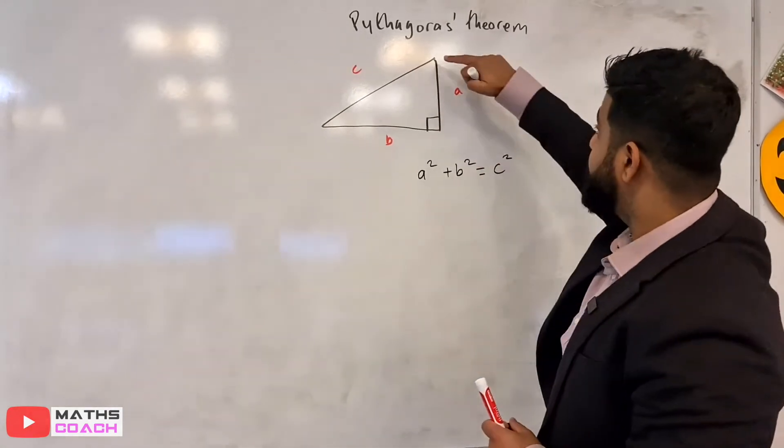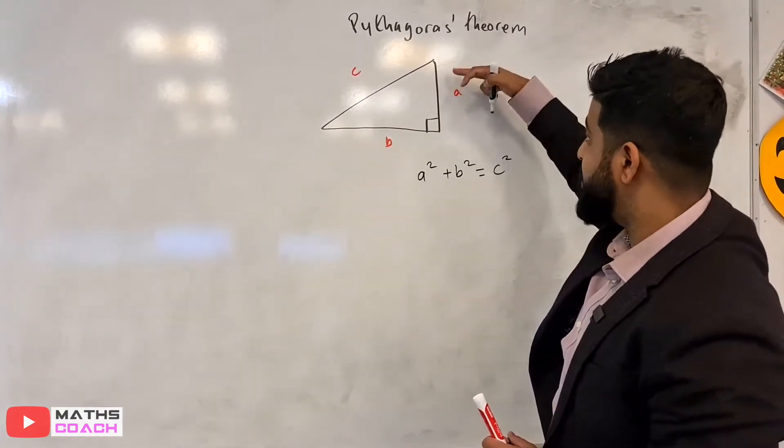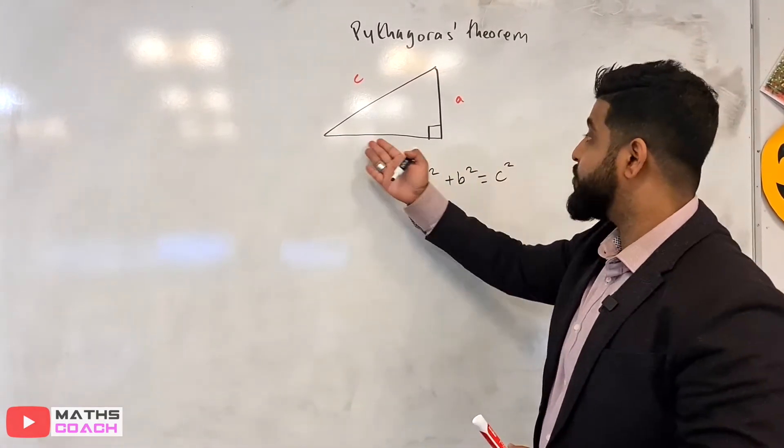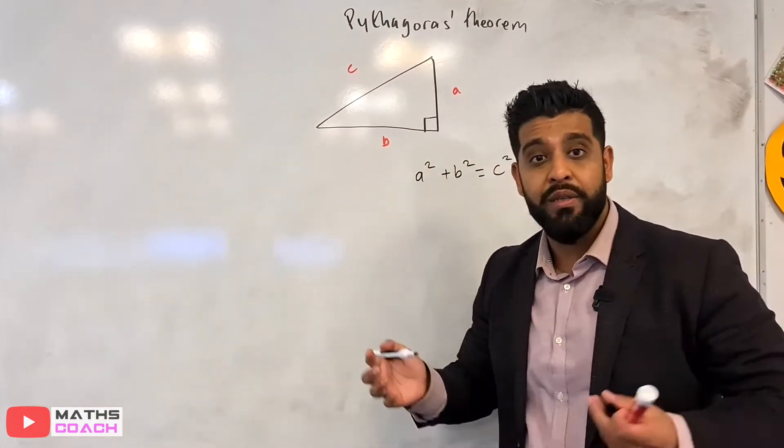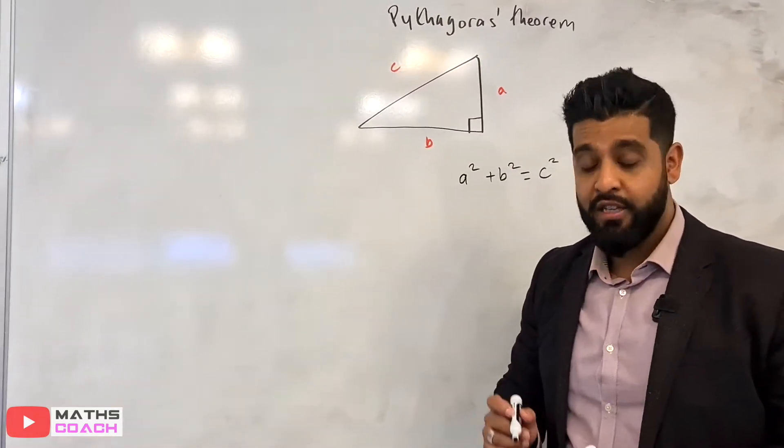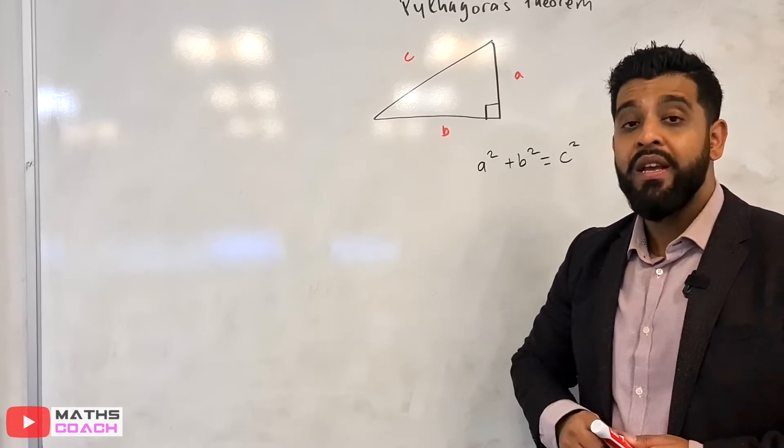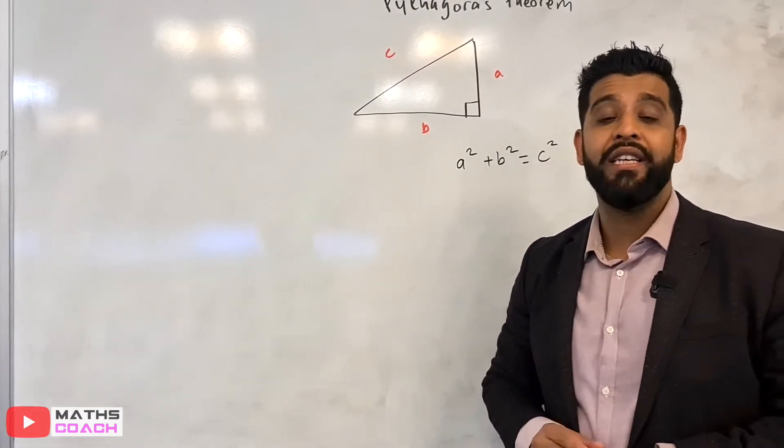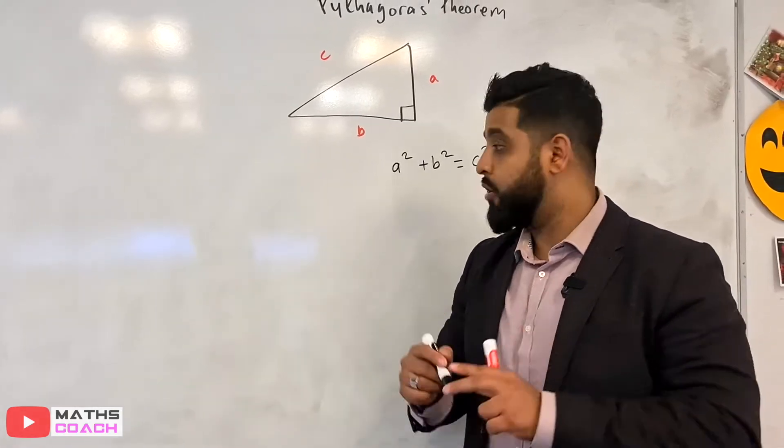Which means that if you take the square of this, so if this was a length, let's say five or something, if you do five squared, and this was another length, so six squared or something like that, then it would be equal to the square of C. So that's how we are going to apply it. Now the best way to actually understand any theorem or any rule is to apply it directly to a question. So I'm going to quickly do one now.